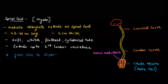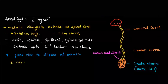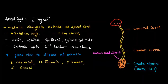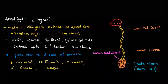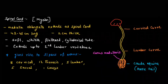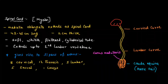The maximum number of nerves arises from the conus medullaris, the end part of the spinal cord. The spinal cord gives rise to 31 pairs of nerves: 8 cervical, 12 thoracic, 5 lumbar, 5 sacral, and 1 coccygeal. These are the different nerves arising from the spinal cord.